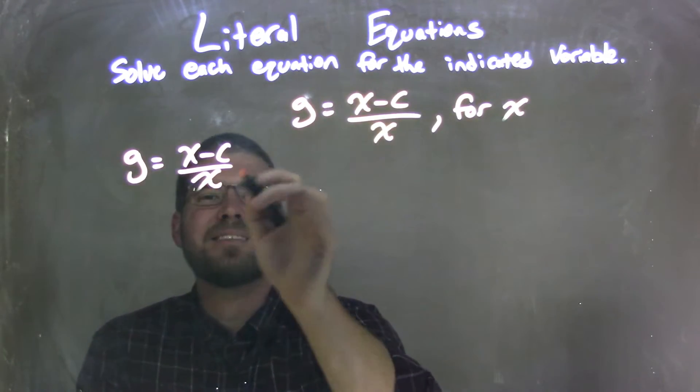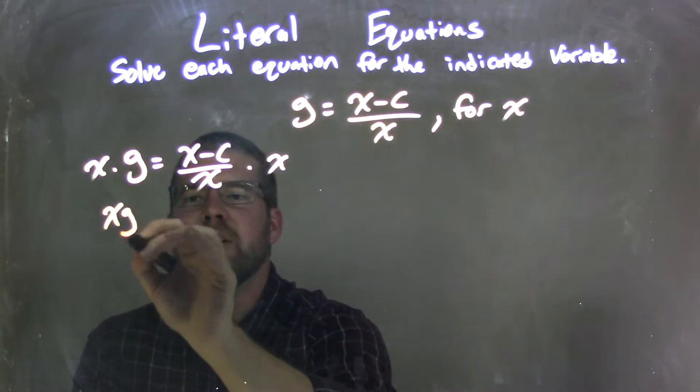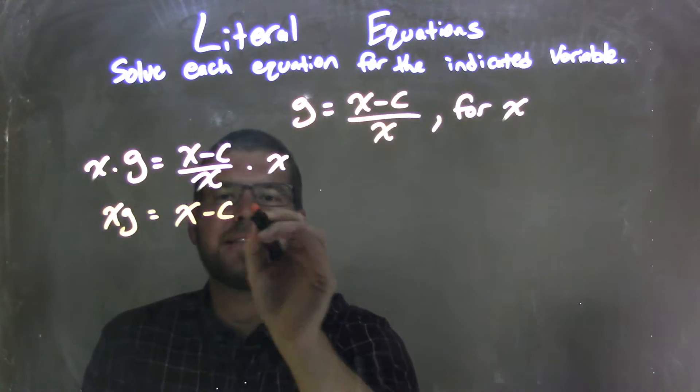My first step is to get x out of the denominator. To do that, I'm going to multiply both sides by x. That gives me xg on the left equals x minus c.